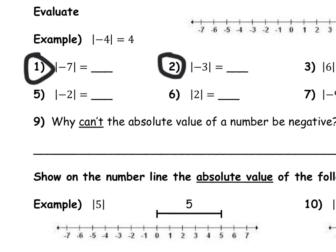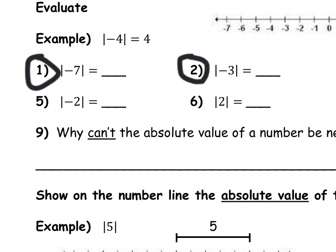Let's look at problem number 1 and 2. This is the absolute value of negative 7, and obviously that number is negative 7, but we want to think how far away from 0 is that? The answer is it's 7 units away from 0. Same thing with number 2. That number is negative 3, but the absolute value of negative 3, or in other words, how far away is negative 3 from 0, it's 3 units away.